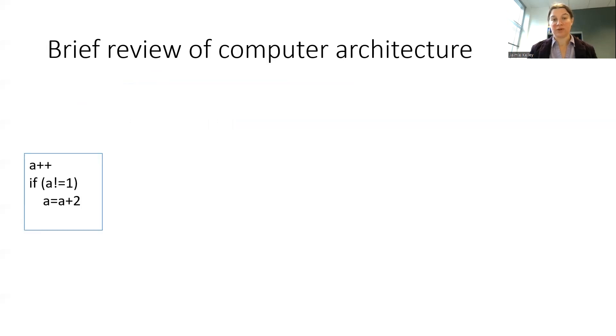Starting with a brief review of what you might have learned in a computer architecture class before starting to look into operating systems. This particular piece of code might seem relatively simple - we have a variable named 'a' that is getting incremented, and then if 'a' is not equal to one, we're going to add two to 'a' and save it back into 'a'.